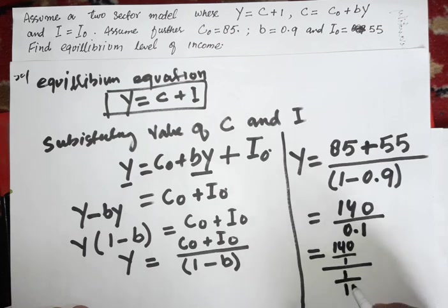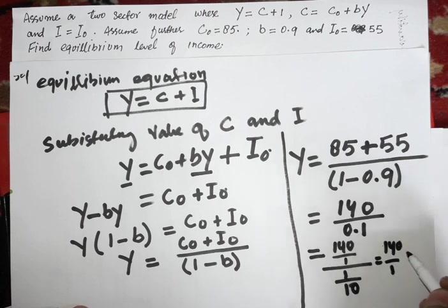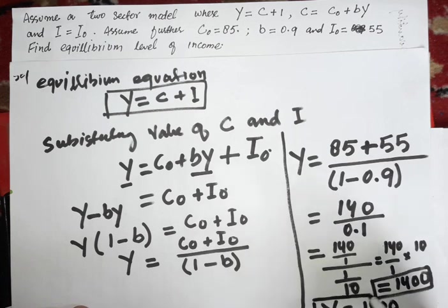This equals 140 divided by 0.1, which equals 1400. So Y equals 1400, this is our equilibrium level of income.